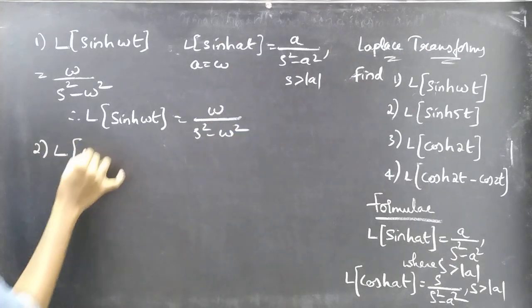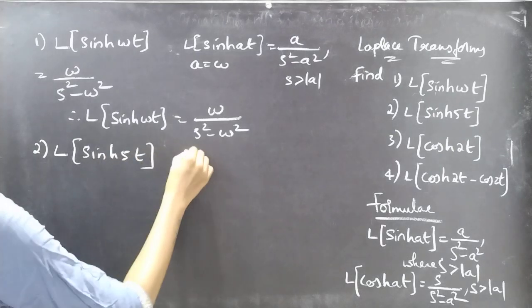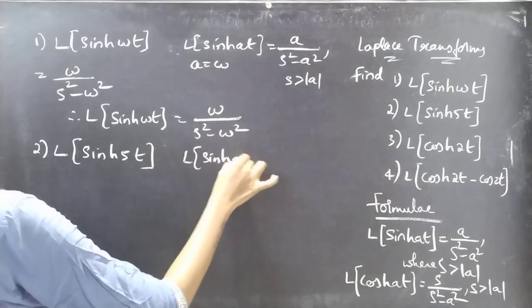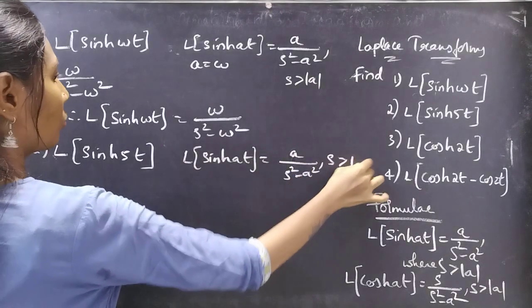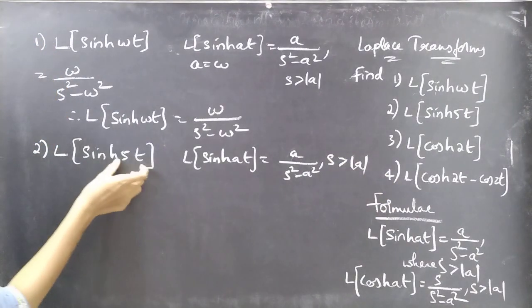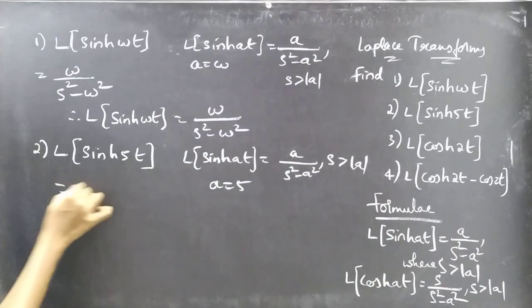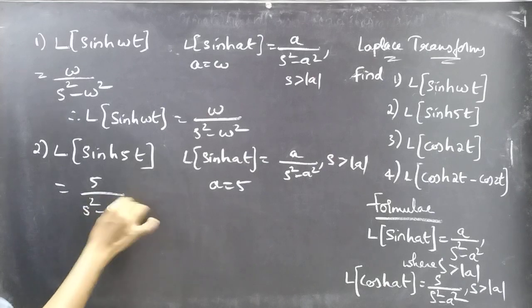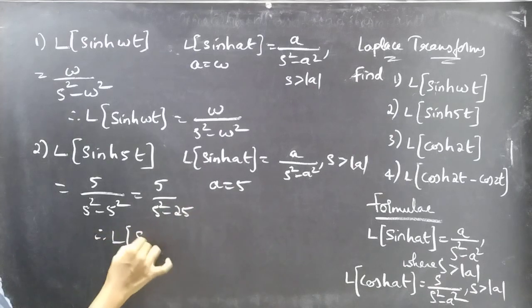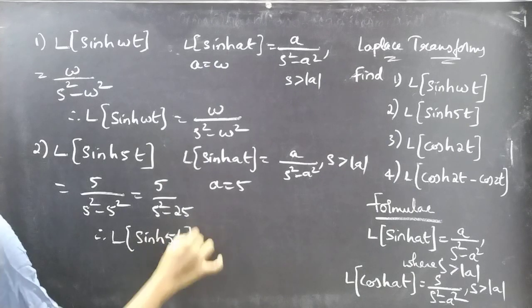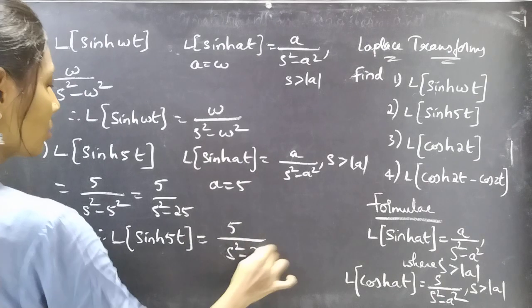Now coming to the second one: L of sinh(5t). Here also we are going to apply the sinh(AT) formula, which is A by S squared minus A squared, for S greater than mod A. Just compare sinh(5t) with sinh(AT); then for A equal to 5, just replace A by 5. We will get 5 by S squared minus 5 squared, which gives us 5 by S squared minus 25. Therefore, L of sinh(5t) equals 5 by S squared minus 25.